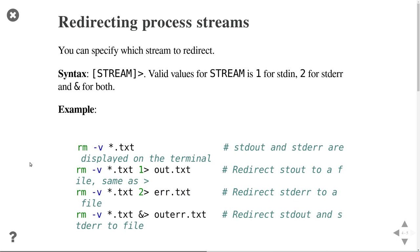By default, when you use the greater-than redirect, it redirects standard output. So if there's an error message, that will still appear on the console. But you can specify which stream to redirect to file using the syntax with a stream number before the greater-than symbol. If you use 1, it's standard output; if you use 2, it's standard error; and if you use &, you redirect both.